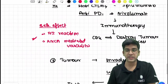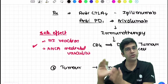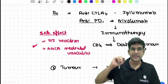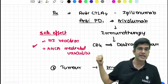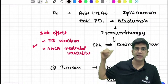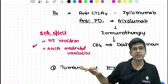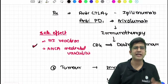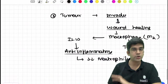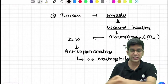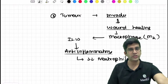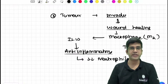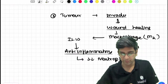We knew about CTLA4 and PD1, and we said let's produce antibodies to destroy them - we created a new category of therapy called immunotherapy. The drug tells my T lymphocytes these are cancer cells and to go and kill them, and the T cells kill them. There are fewer side effects compared to conventional chemotherapy, but the biggest side effect is autoimmune reactions, including ANCA-mediated vasculitis. Whenever a tumor invades, M2 activated macrophages produce interleukin-10 (anti-inflammatory) and TGF-beta (wound healing).